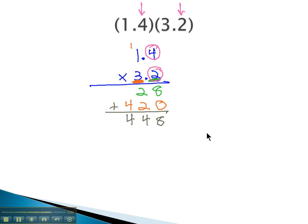1 from the second number. We have 2 decimal digits, which means we need 2 decimal digits in our answer. 4.48.